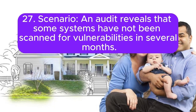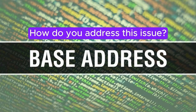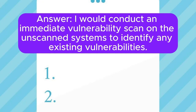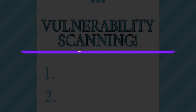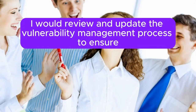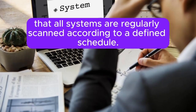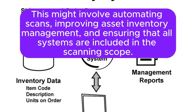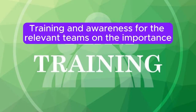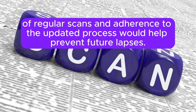Scenario 27: An audit reveals that some systems have not been scanned for vulnerabilities in several months. How do you address this issue? I would conduct an immediate vulnerability scan on the unscanned systems to identify any existing vulnerabilities. I would review and update the vulnerability management process to ensure that all systems are regularly scanned according to a defined schedule. This might involve automating scans, improving asset inventory management, and ensuring that all systems are included in the scanning scope. Training and awareness for the relevant teams on the importance of regular scans and adherence to the updated process would help prevent future lapses.